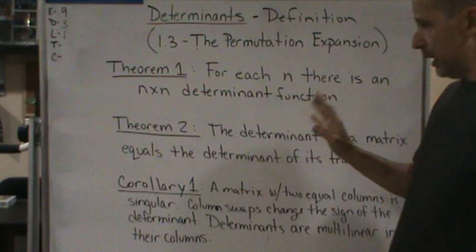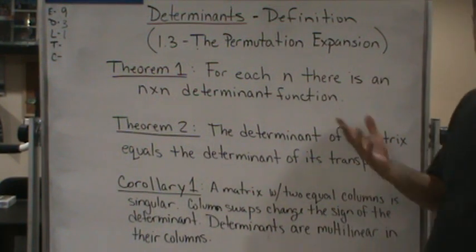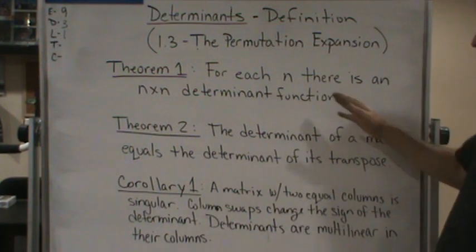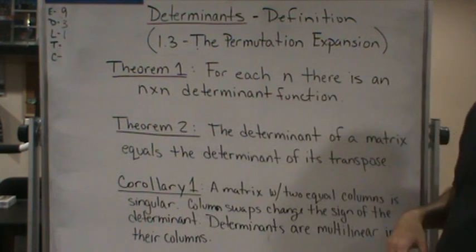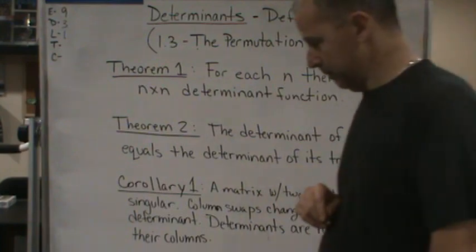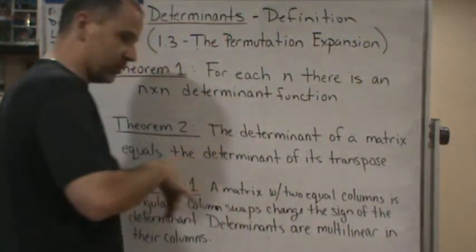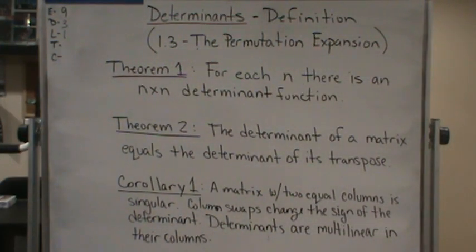So the first theorem basically says, well, it does state for each n, there is an n by n determinant function. Okay, that's theorem number one. So these results are basically the culmination of the subsection that we were talking about at the beginning.